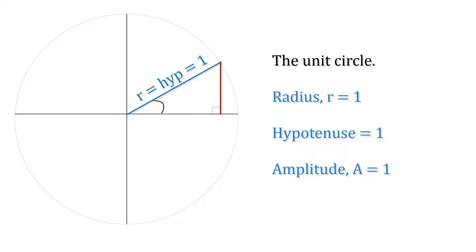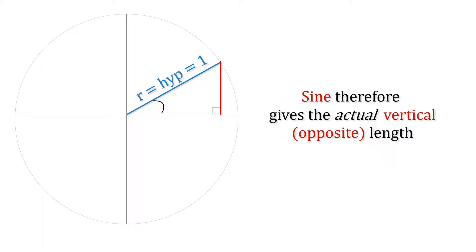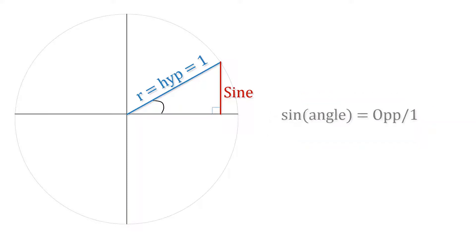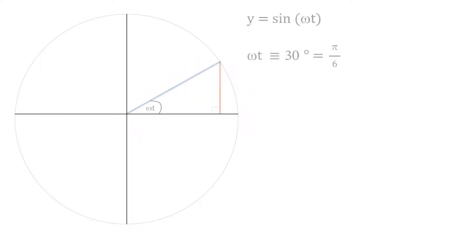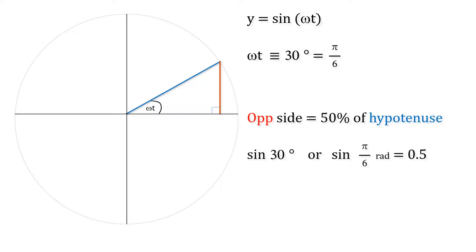The unit circle is a circle with a radius of one unit. The radius is equal in length to the hypotenuse, and this also represents the amplitude. The sine is the opposite over the hypotenuse. So with y equals sine omega t, when omega t is equivalent to 30 degrees or pi over 6 radians, the sine of that is 0.5, meaning the opposite side is half as long as the hypotenuse.